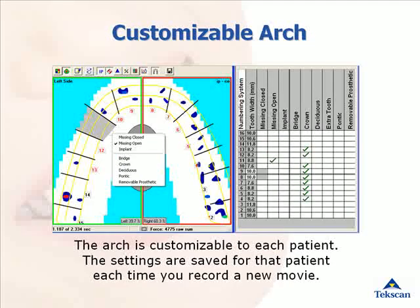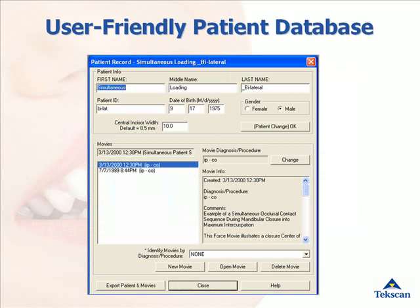The T-Scan gives you the ability to customize the dental arch and the software for each individual patient. You can indicate missing open, missing closed, crowns, implants, and more. This can be done either before or after making a recording. The T-Scan includes a patient database, and bridges are available with many of the practice management systems on the market today. It is easy to network the T-Scan system to use in multiple operatories.